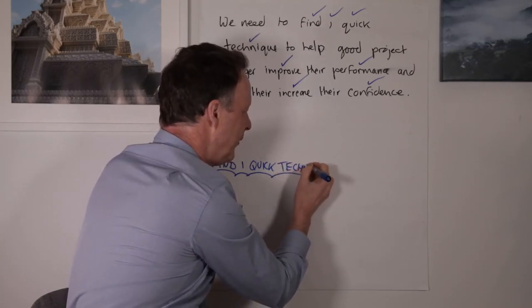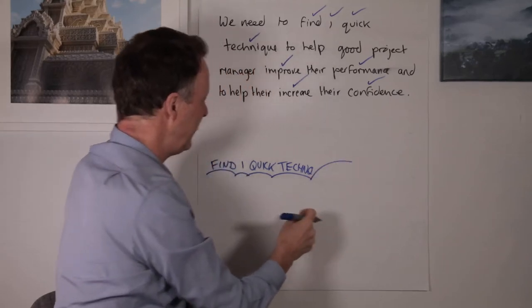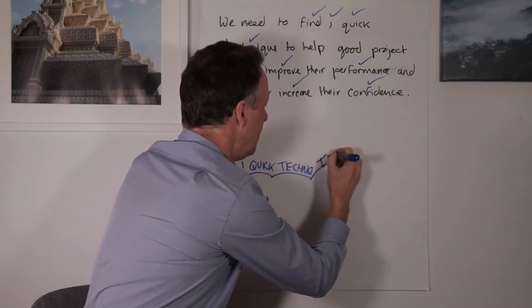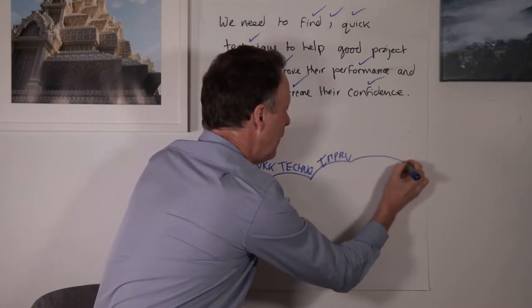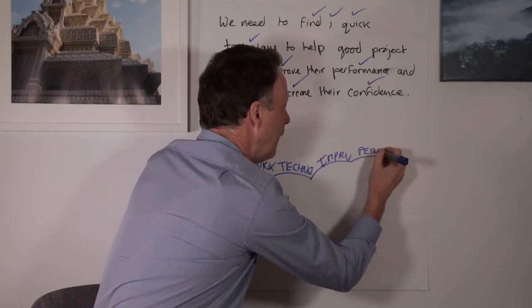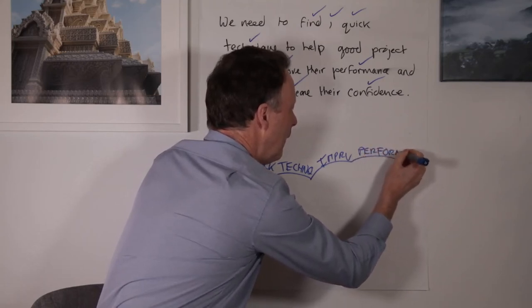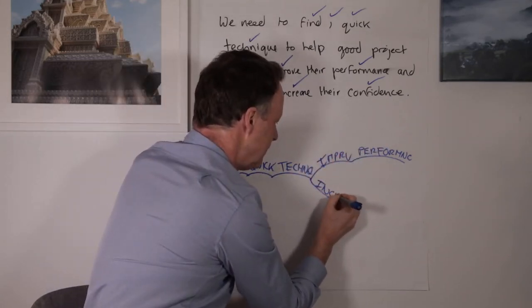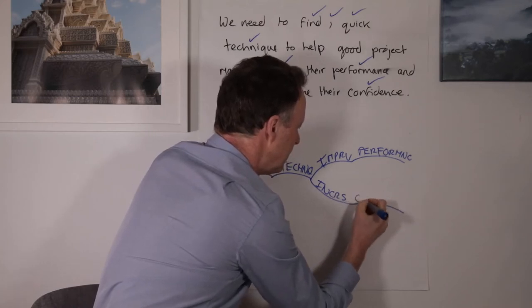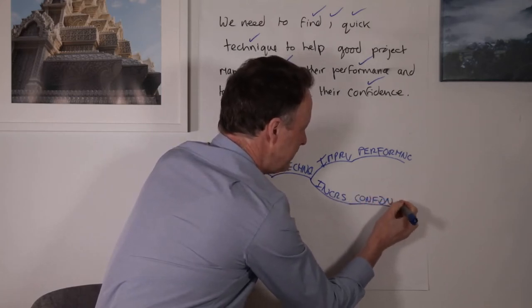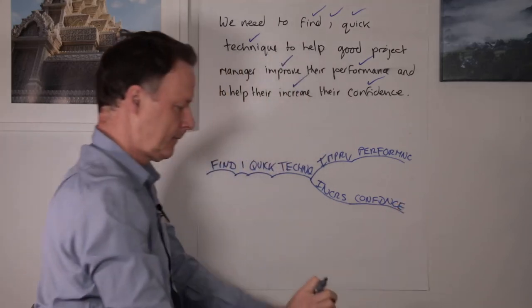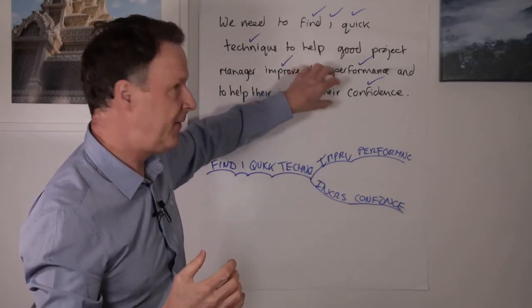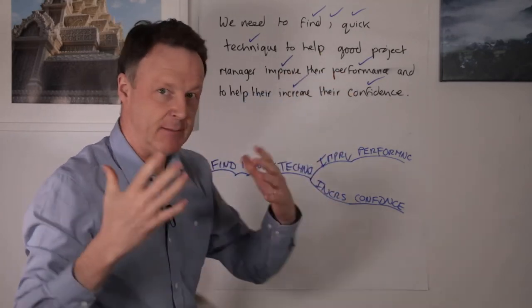I abbreviate things, it helps with speed, also helps with managing the knowledge on the page. Improve performance and increase confidence. So one of the results of this deep filtering and then the deep processing